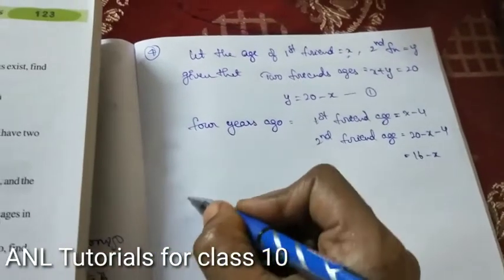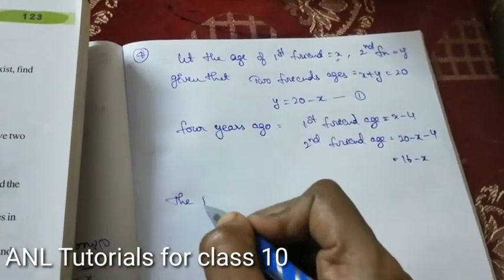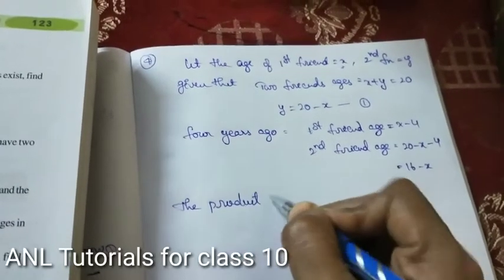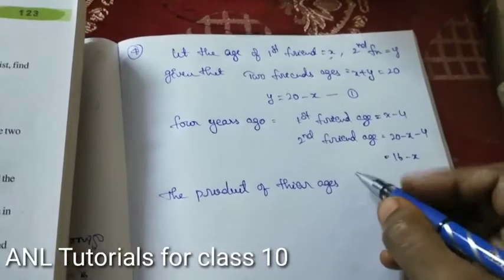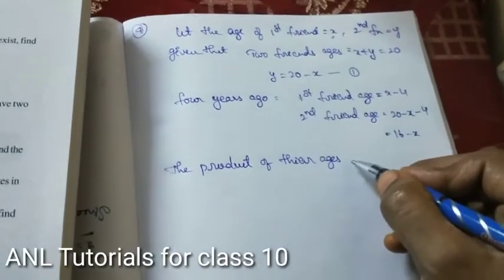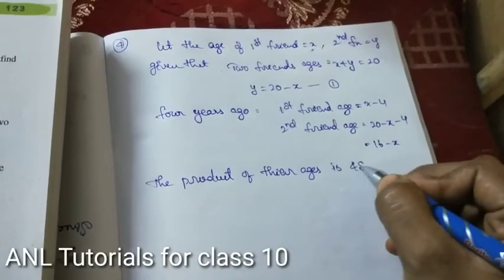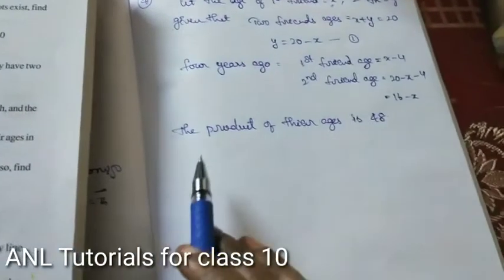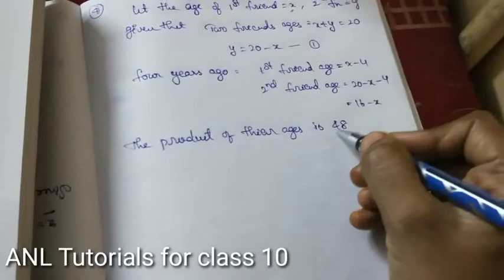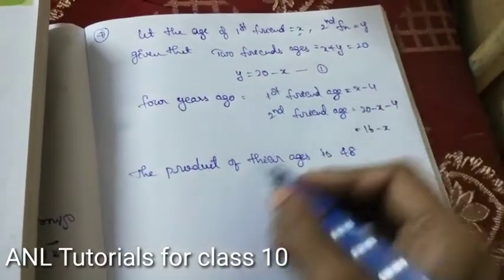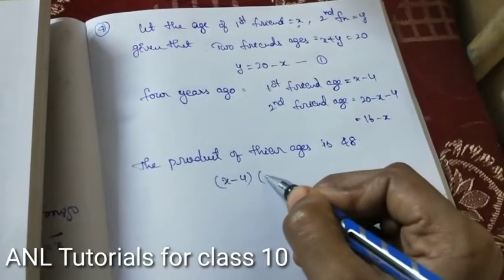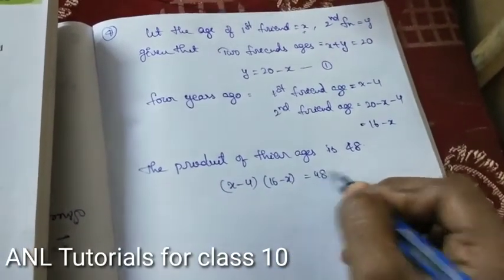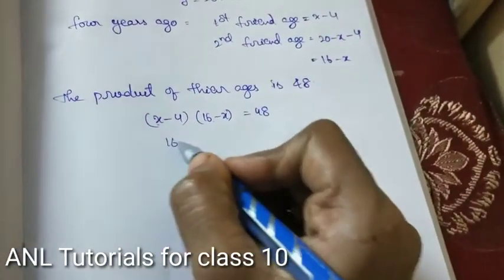The product of their ages four years ago was 48. So we write the equation: (x minus 4) into (16 minus x) equals 48. Multiplying: x into 16 is 16x, and x into minus x is minus x squared.